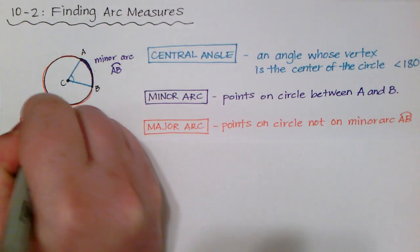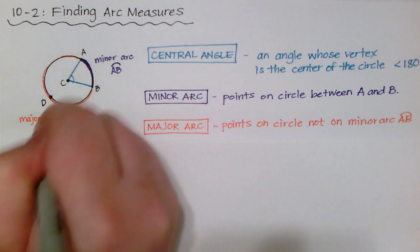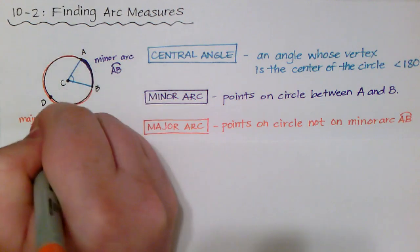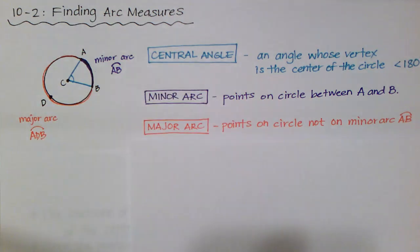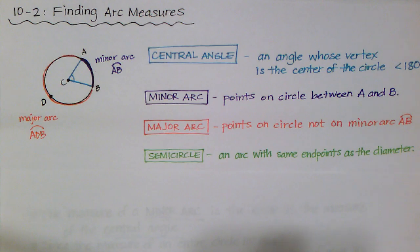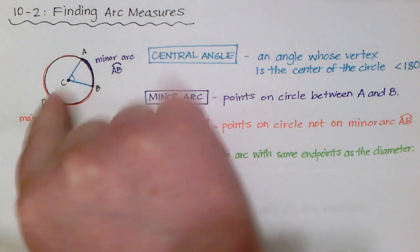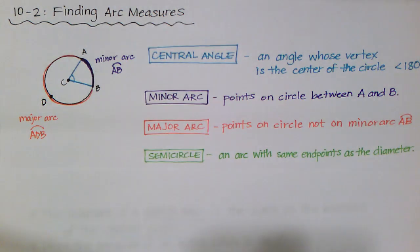And so, for the major arc, to differentiate, we're going to do A, D, B for its name. So, the major arc will typically have three points, or yeah, three points in its name. The last thing that we're going to discuss is the semicircle. And it's an arc with the same endpoints as the diameter. So, if I knew two points to make the diameter of a circle, let's just say it would be going halfway around. And that's the semicircle.